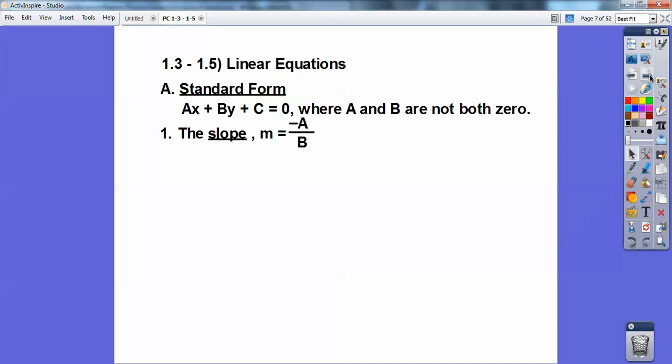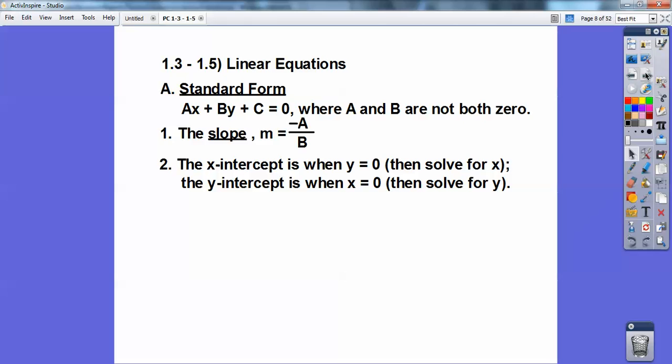The slope is negative A over B. I like to say opposite A over B. So opposite the number in front of x over the number in front of y. The x-intercept is when y equals zero, so solve for x. The y-intercept is when x equals zero, so solve for y.